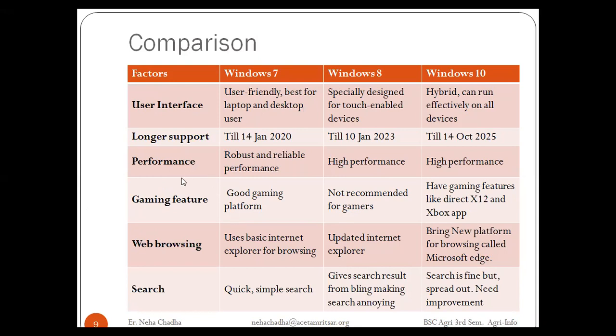Then performance: Windows 7 has robust and reliable performance. Windows 8 and Windows 10 both offer high performance. Then the gaming feature: Windows 7 is a good gaming platform. Windows 8 is not recommended for gamers. Windows 10 has gaming features like DirectX 12 and Xbox apps, which provide enhanced gaming features.